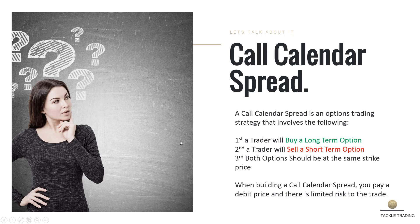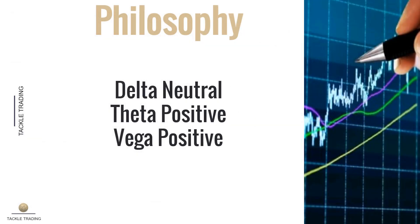Both options should be at the same strike price, which is generally going to be done at the money. There is limited risk. It is a debit trade, and it fits nicely in a portfolio designed for different reasons and different purposes. The philosophy of a call calendar spread is that it's a neutral strategy — you don't want it to go up or down. You're generally going to be neutral.